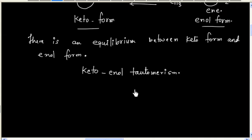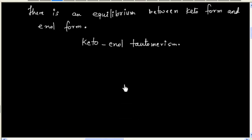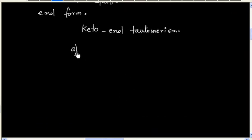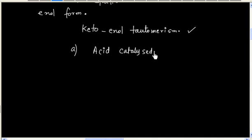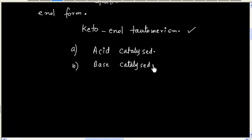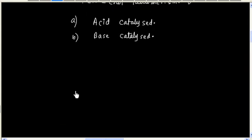Keto-enol tautomerism can be acid catalyzed or it can be base catalyzed. Let us now discuss the mechanism for acid-catalyzed keto-enol tautomerism.